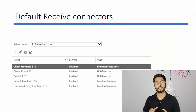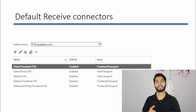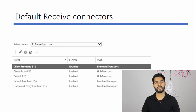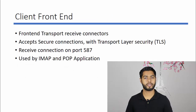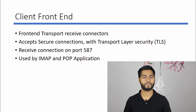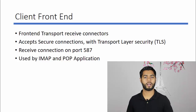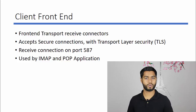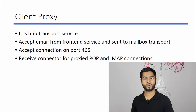Following are the five receive connectors created in Exchange once you set up Exchange Server 2016. The first one is the Client Front End receive connector — a Front End Transport Service connector which accepts secure TLS connections on port 587. It is used for IMAP and POP3 client connections, so Exchange Server listens to IMAP and POP3 connections on port 587 using this connector. The next is Client Proxy.